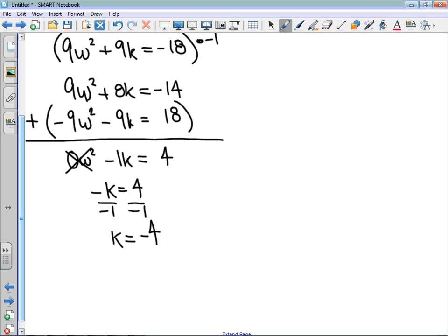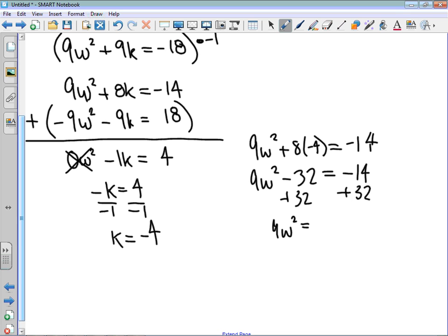Now again, common problem is that students will get that answer and then forget that they have to do something else with it. I need to take that value of k and solve for w. I'm going to use that top equation. So 9w squared plus 8 times negative 4 is equal to negative 14. I get 9w squared minus 32 is equal to negative 14. I'm going to add that 32 to the other side. I get that 9w squared is equal to negative 14 plus that's 18, which means I can divide by 9. I get that w squared is equal to 2.